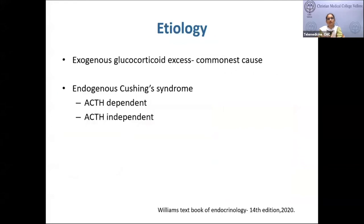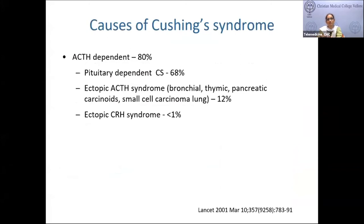The commonest etiology is exogenous glucocorticoid excess, used over-the-counter for asthma, arthritis, aches and pains. Endogenous Cushing syndrome is classified as ACTH-dependent or ACTH-independent. ACTH-dependent constitutes about 80%, of which pituitary-dependent Cushing's is most common at 68%. Ectopic ACTH syndrome from carcinoid tumors of the bronchus, thymus, pancreatic carcinoids, or small cell lung carcinoma constitutes about 12%. Ectopic CRH production from pheochromocytoma is very rare. ACTH-independent Cushing's constitutes 20%, with adrenal adenoma being most common, followed by adrenocortical carcinoma. Macronodular and micronodular adrenal hyperplasia are less common.